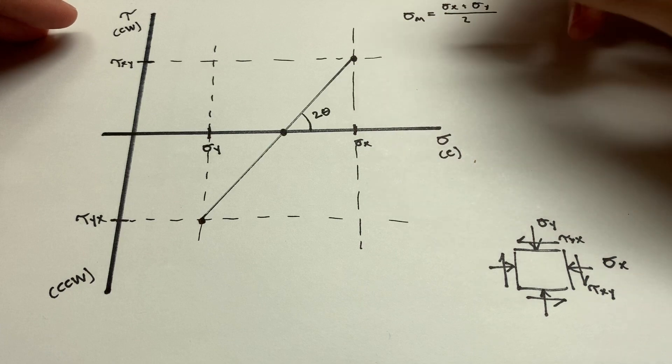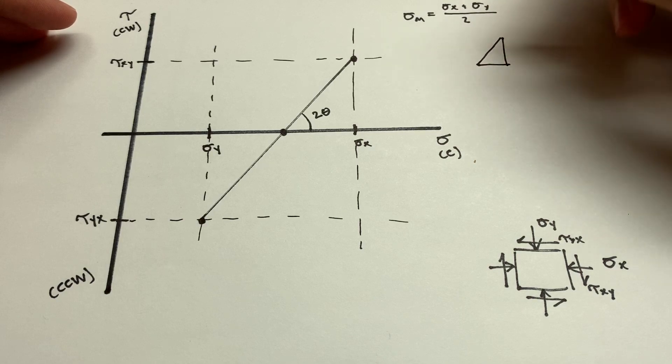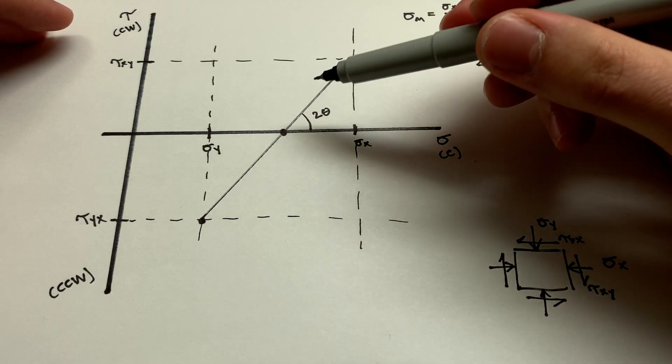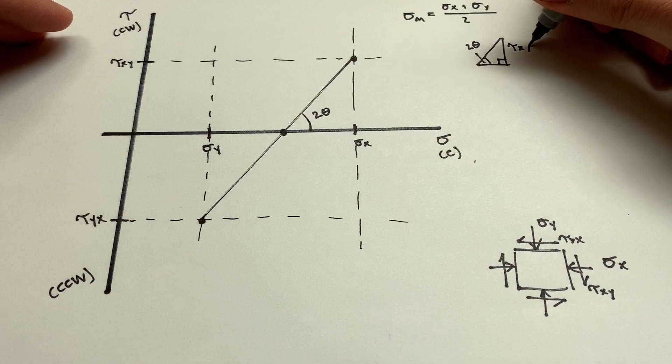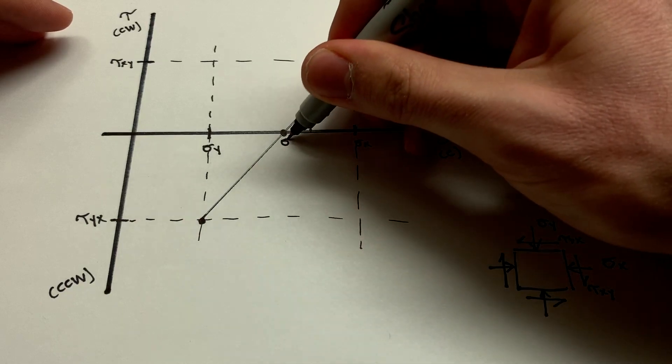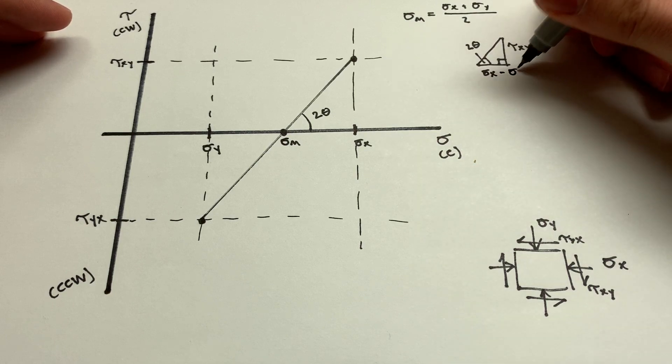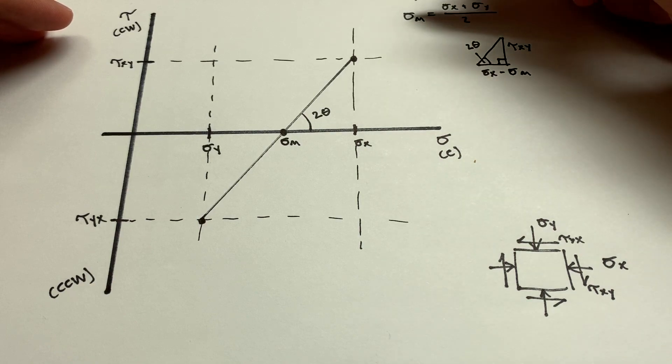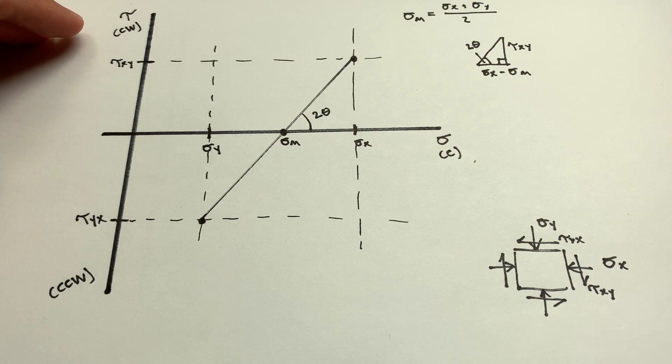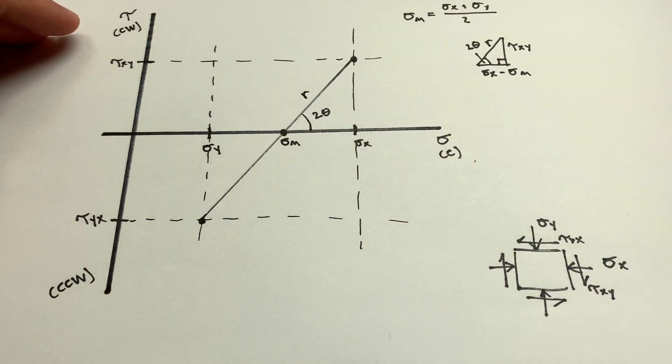And then using this, we can make a little triangle. I won't draw an arrow, but you can see this is our right triangle. That's our right angle. This guy in here is 2 theta. And then the y distance is going to be just tau xy. And the x distance is going to be the difference between these two points. I'll label this here as sigma m. So, that's going to be sigma x, the bigger one, minus sigma m, the smaller one. And you can, of course, plug sigma m in as these values here. For the sake of keeping it clean here, I won't do that just yet. And then this we'll call r. The hypotenuse of this triangle is going to be r. That's the radius of the Mohr's circle.